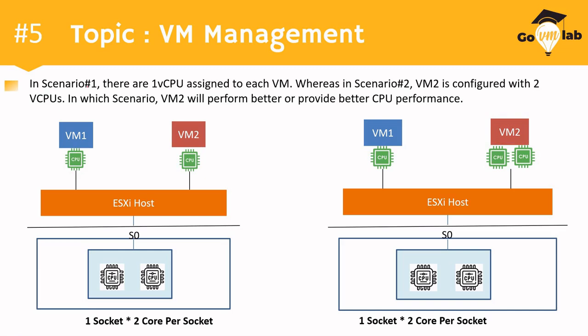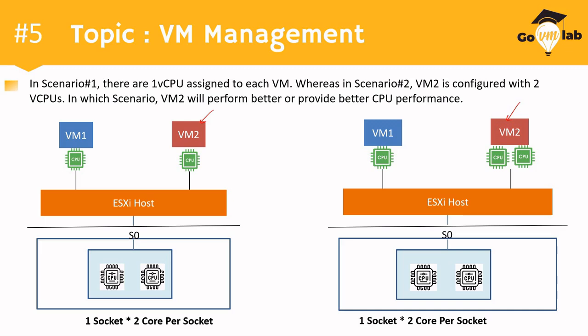Now let's look at the problem statement. The questioner says that in scenario number one there is one vCPU assigned to each VM, whereas in scenario number two, VM2 is configured with two vCPUs. In which scenario will VM2 perform better or provide better CPU performance? You have to figure out in which specific scenario — scenario number one or scenario number two — VM2 will provide better CPU performance for applications running inside the VM. Please take a pause and try to find out the answer.